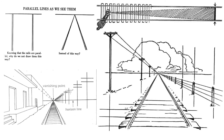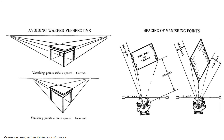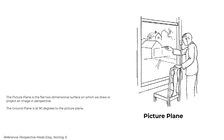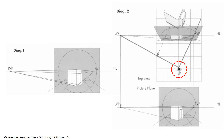This illustrates why we see parallel lines converging. The location of the vanishing point is shown here. The placing of the vanishing point is crucial to avoid warped perspective. We also have the positioning and spacing of the vanishing point. The picture plane is a flat two-dimensional surface on which we draw or project an image in perspective. The ground plane is at 90 degrees to the picture plane. Here is a picture of a man holding a sheet of cellophane or glass upright before his eye. The location and height of the eye, which is a point in space that has no direction, is known as the station point.